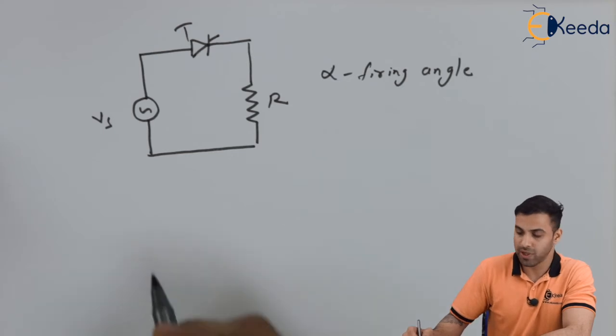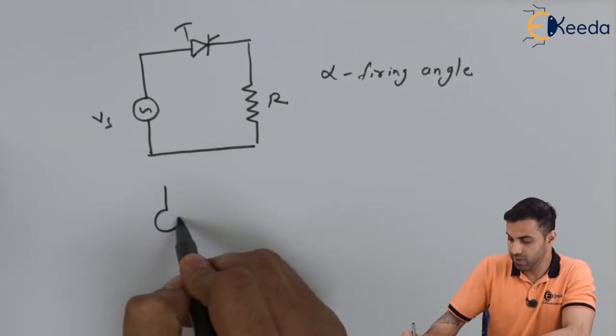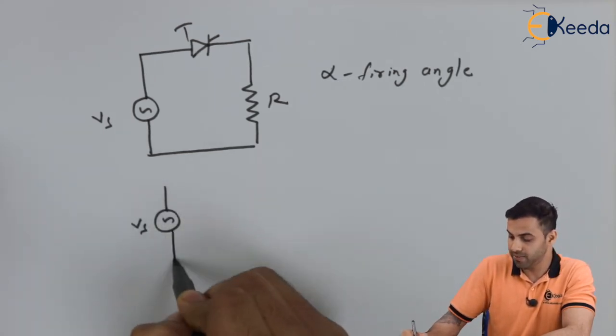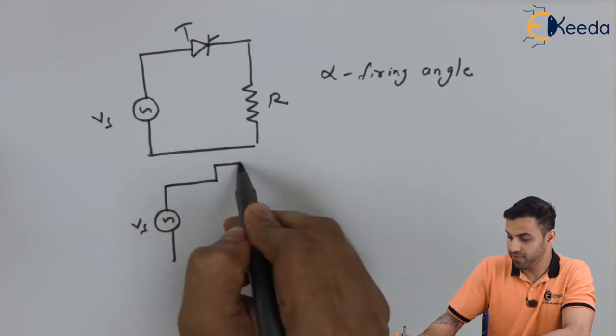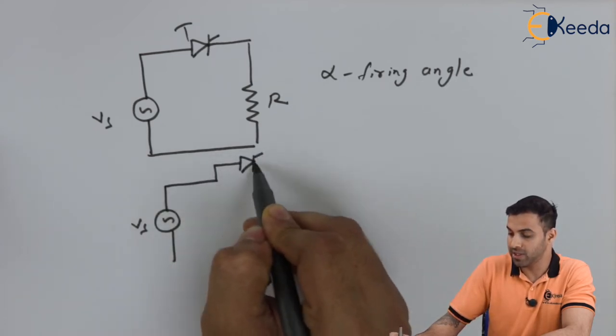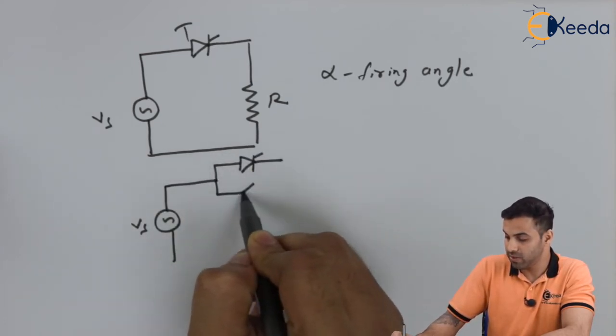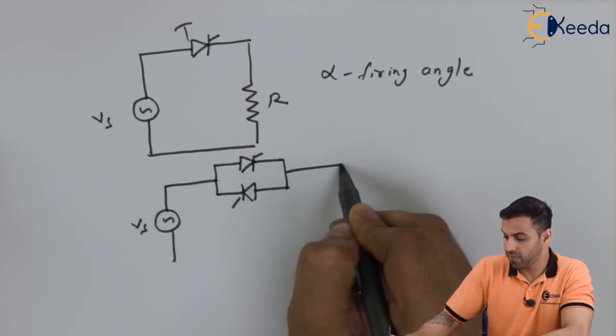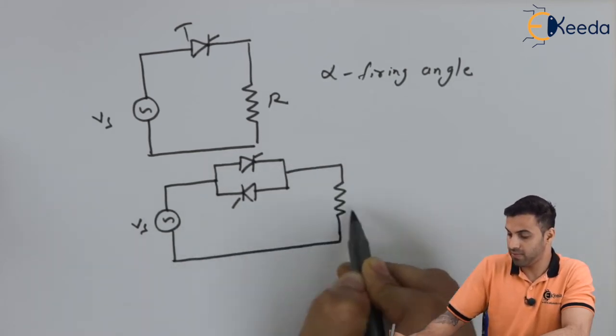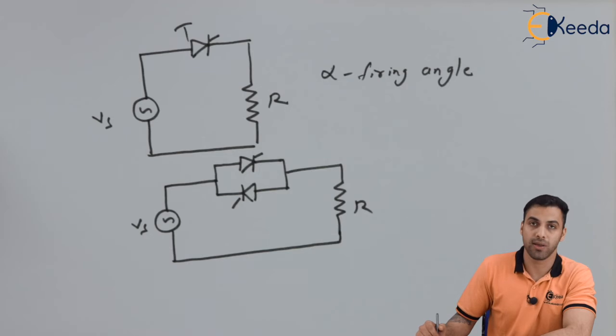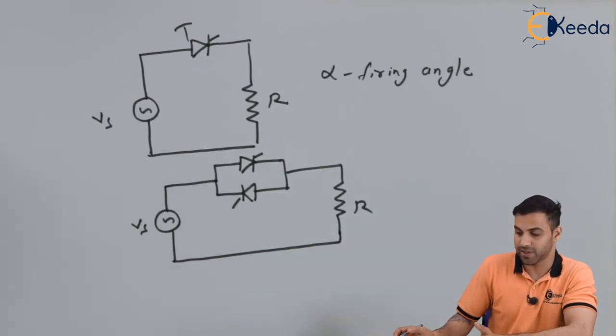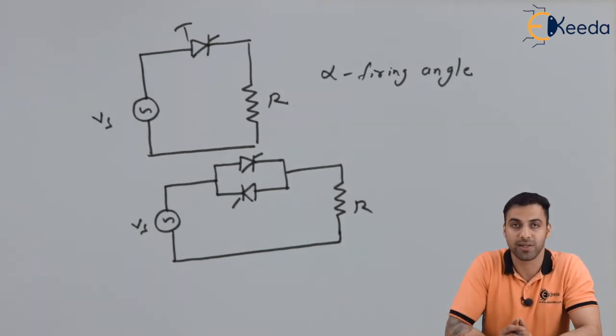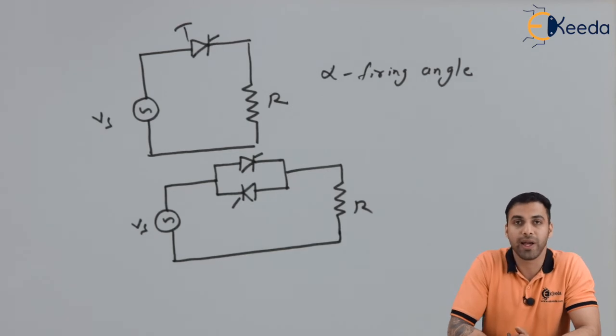And one more type of circuit would be this is Vs, so I'm connecting thyristor in two different directions. This is also called the half wave rectification process in the AC voltage control method. So here I'm only getting the positive pulses and the negative pulses are blocked by the thyristor.